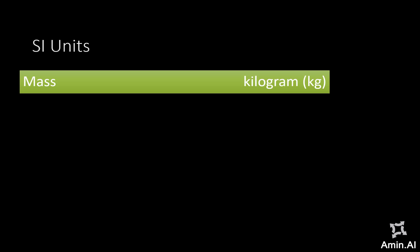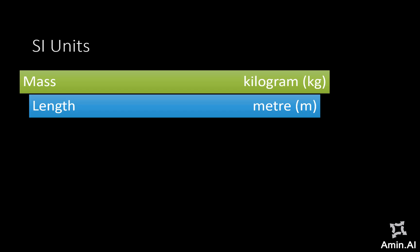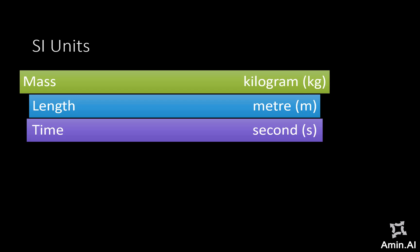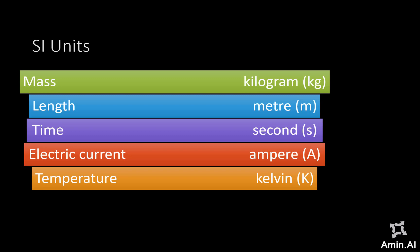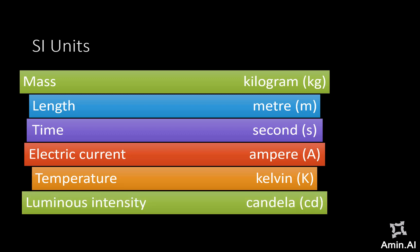The first thing we are going to start is a quick review of the SI units. For mass, the SI unit is kilogram. For length, we will be using meter. For time, it's second. For electric current, it's ampere. For temperature, it's Kelvin. And for luminous intensity, the SI unit is candela, which is directly indicative of how bright the light is. All other units are going to be derived from these base SI units.